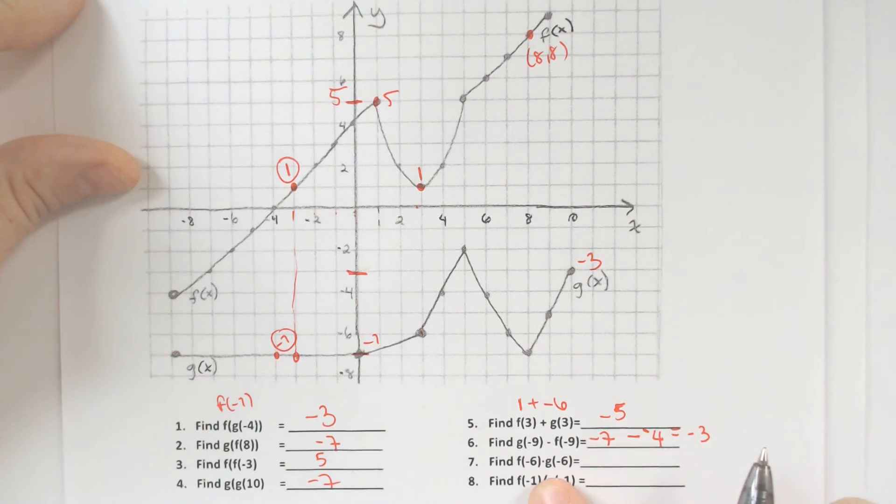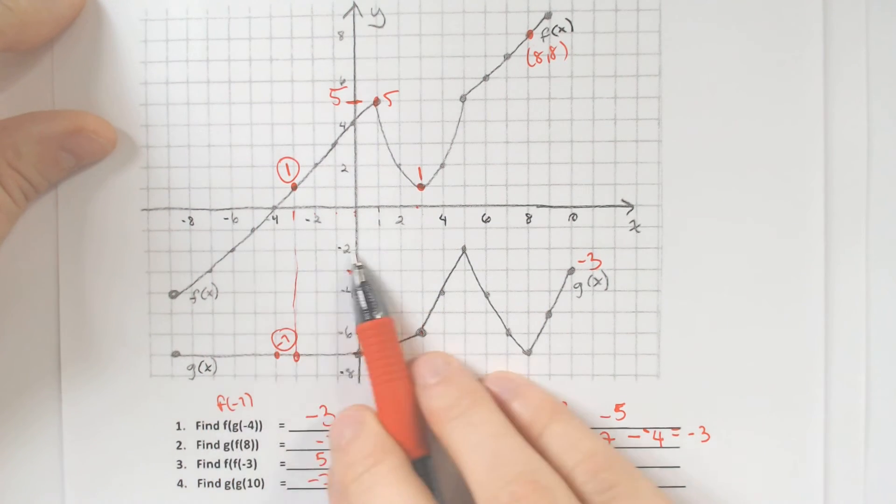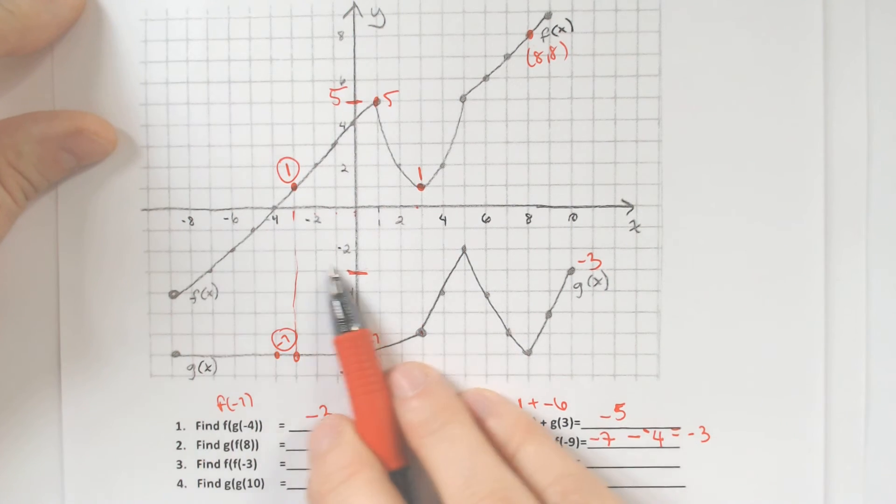f of negative 6 times g of negative 6 for number 7. f of negative 6 is over here, and we are at negative 2.